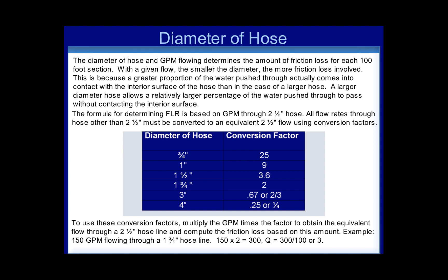Let's look at an example. If you have 150 GPM flowing through an inch and three quarter hose line, first you would take 150 and multiply it by 2, which equals 300. Q would then equal 300 divided by 100, or simply 3.